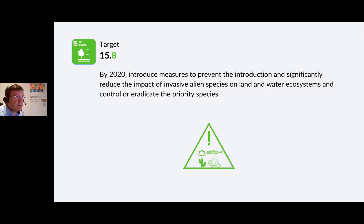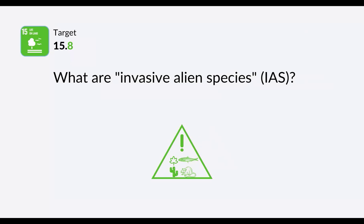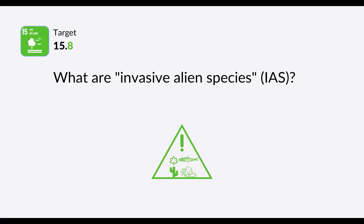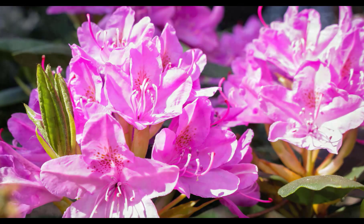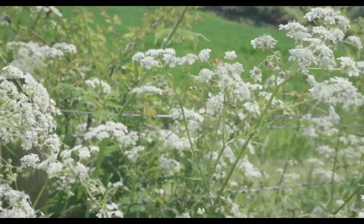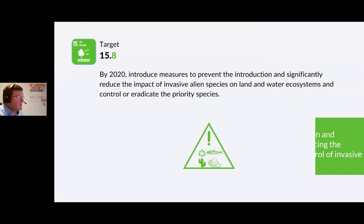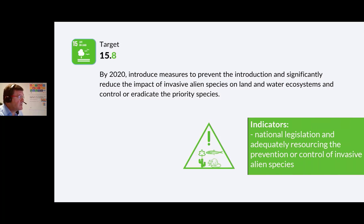Target 15.8: By 2020, introduce measures to prevent the introduction and significantly reduce the impact of invasive alien species on land and water ecosystems, and control or eradicate the priority species. Invasive alien species are animals and plants introduced accidentally or deliberately into a natural environment, causing a serious threat to native plants and animals. Examples include rhododendron, giant hogweed and Japanese knotweed. The indicator is the proportion of countries adopting relevant national legislation and adequately resourcing the prevention or control of invasive alien species.